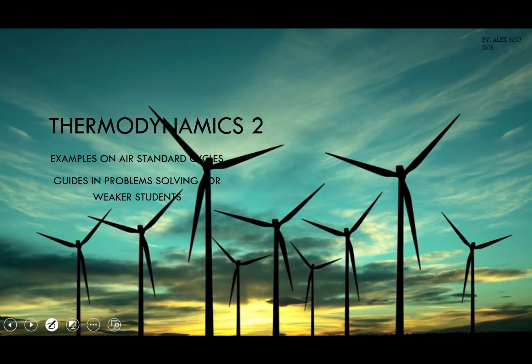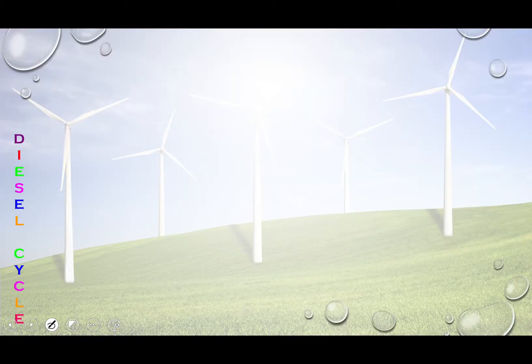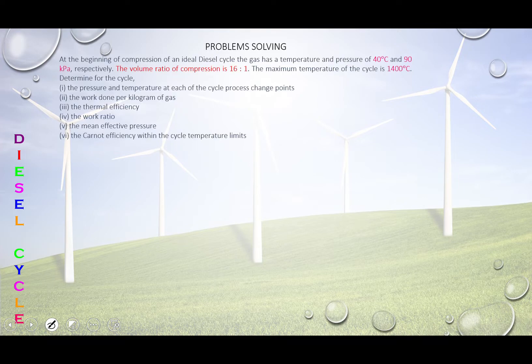This part will be looking at the diesel cycle with an example. At the beginning of compression of an ideal diesel cycle, the gas has a temperature and pressure of 40 degrees C and 90 kPa.